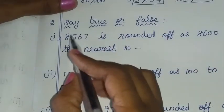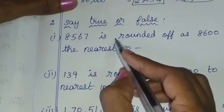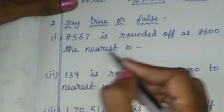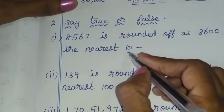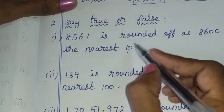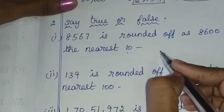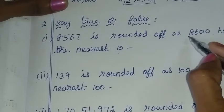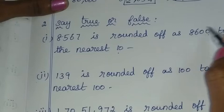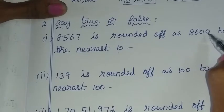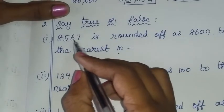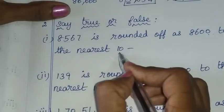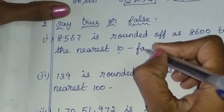Say true or false: 8,567 is rounded off as 8,600 to the nearest 10. For the nearest 10, we check the units digit — the nearest tens around 8,567 are 60 and 70. You should round off to 8,570, not 8,600. 8,600 would be rounding to the nearest 100. So, it is false.